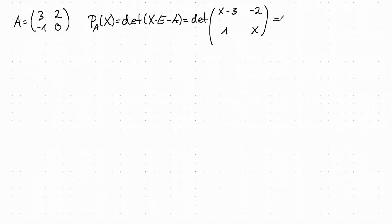So the determinant of a 2x2 matrix is just the product of those two diagonal entries. So x minus 3 times x minus the product of the other diagonal which is 1 times minus 2. So this is just x squared minus 3x plus 2.